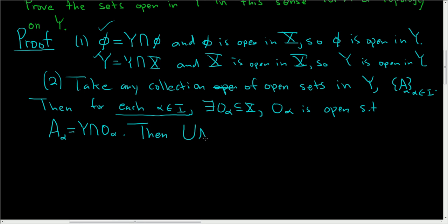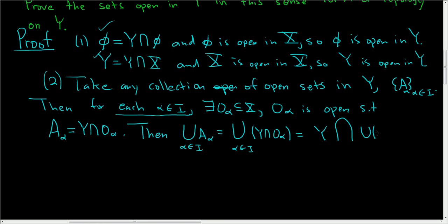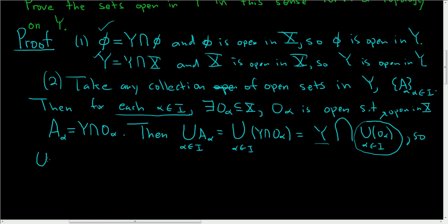Now we look at the union of the A_alphas. The union of A_alphas equals the union of (Y intersected with O_alpha), which by basic set properties equals Y intersected with the union of the O_alphas. This union of O_alphas is open in X because the union of any number of open subsets of X is also open in X, since X is a topological space. So we have Y intersected with an open set in X, which shows the union of the A's is open in Y.